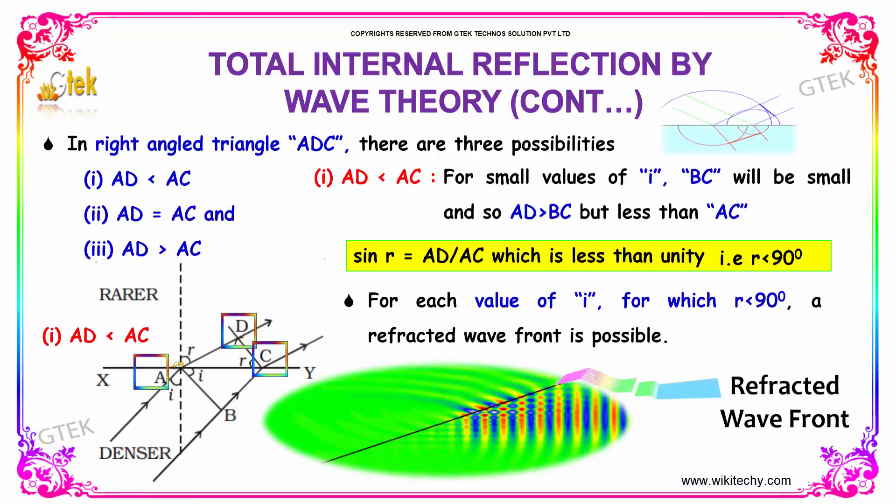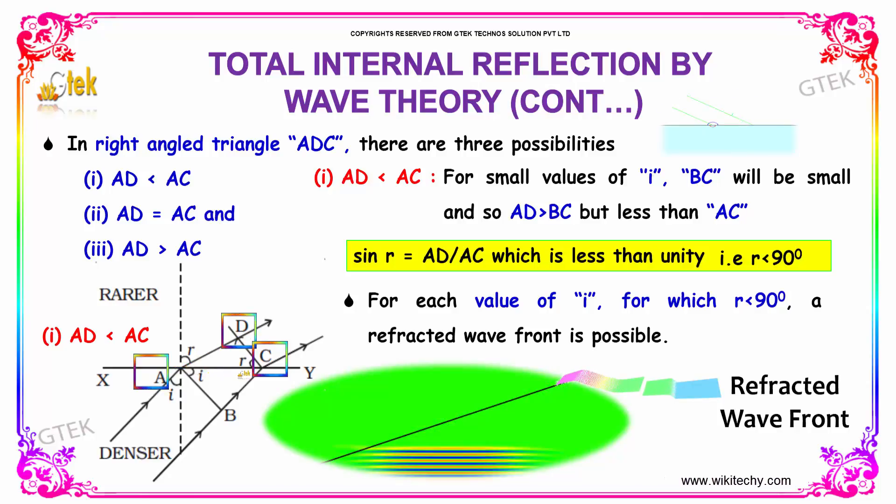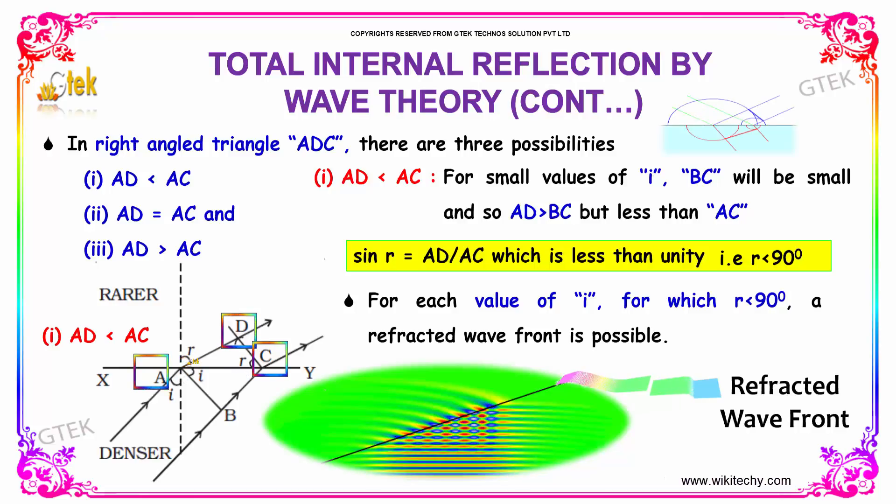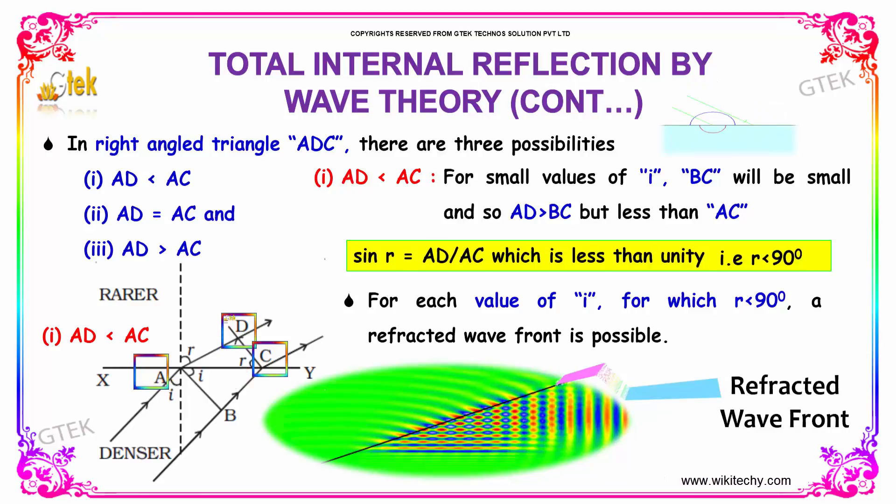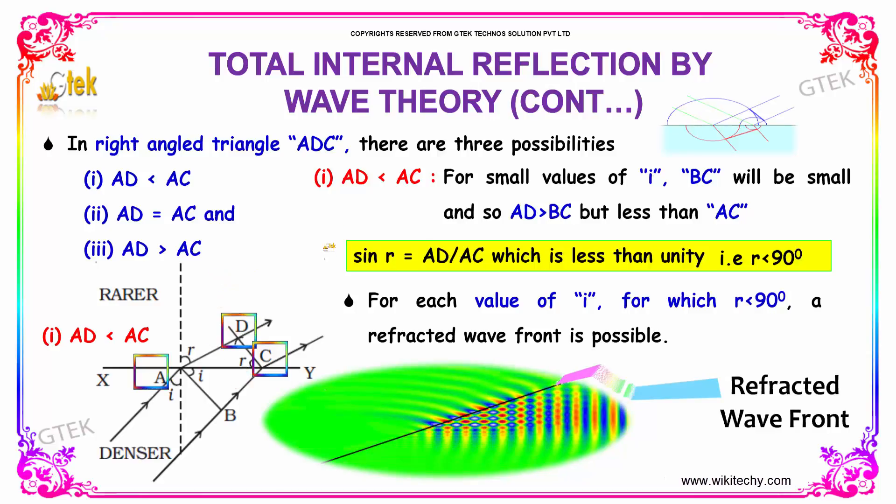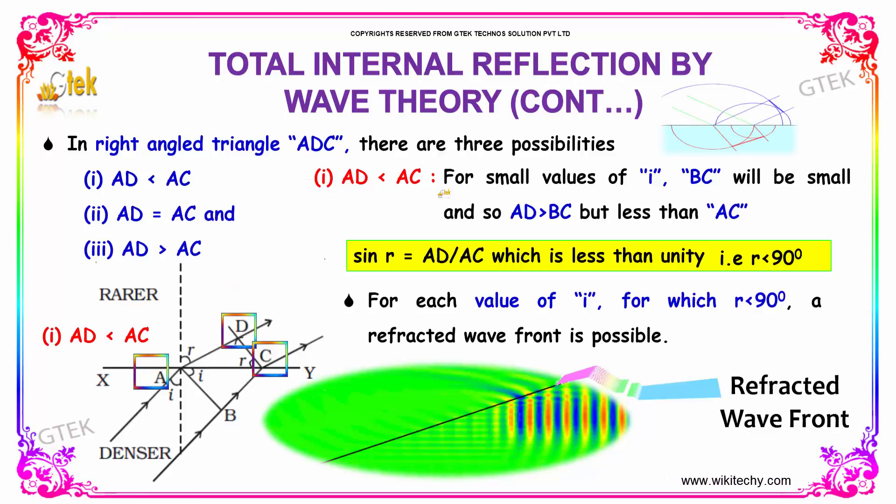Sine r is equal to AD divided by AC which is less than unity, so r is less than 90 degrees. For each value of i for which r less than 90 degrees, a refracted wavefront is possible. Thus, the condition of AD less than AC.